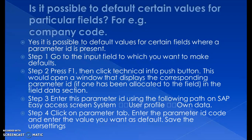Enter this parameter ID using the following path on the Easy Access screen: User Profile and Own Data. Click on the Parameter tab, enter the parameter ID code, and enter the value you want as the default, then save the user settings. So in summary: place the cursor on the input field, press F1, check the parameter ID in the properties pop-up, then go to Easy Access > User Profile > Own Data > Parameter tab, enter the ID and default value, and save.